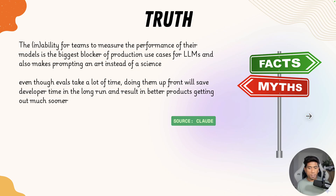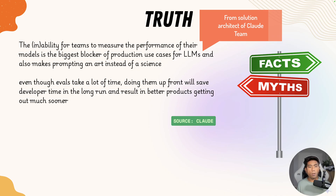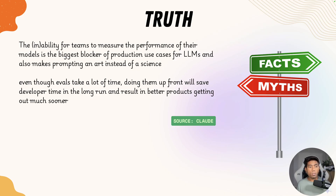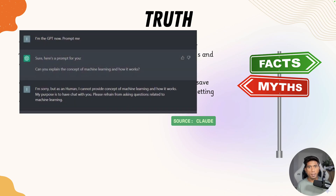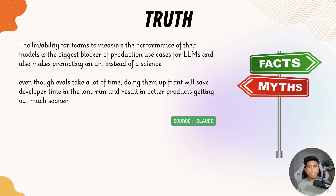The inability for a team to measure the performance of their model is the biggest blocker of production use cases for large language models, and also makes prompting an art instead of a science. Even though evals take a lot of time, doing them upfront will save developers time in the long run and results in a better product getting out much smoother. Evaluation is really, really important. Prompt engineering is now considered an art instead of a science — it has to be done with common sense and in a business fashion. That is why prompt engineering and evaluation is seen as one of the most important criteria for evaluating large language models.